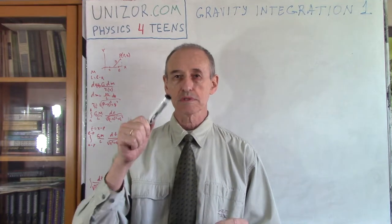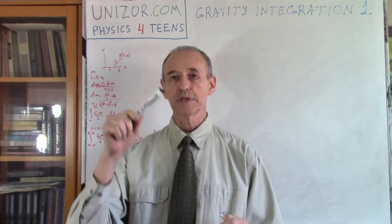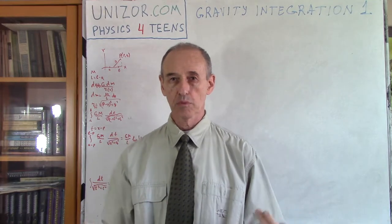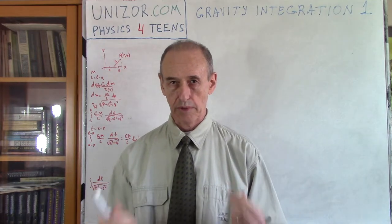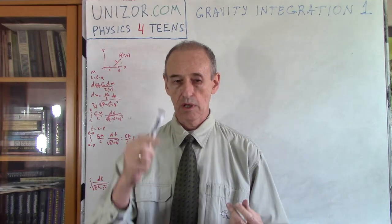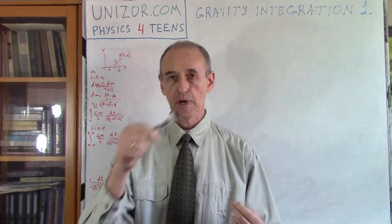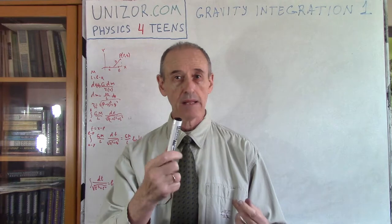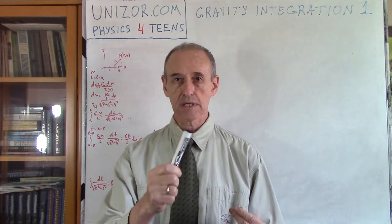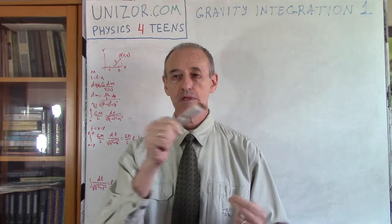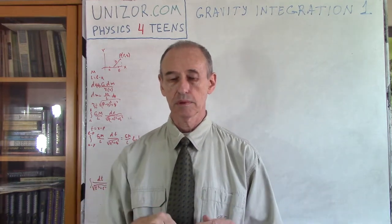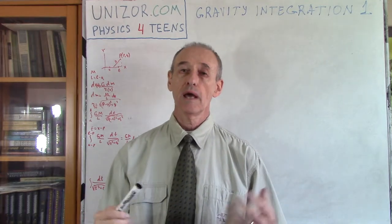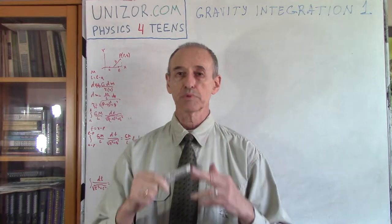So the fields are superpositioned on each other — they are adding the potential. The gravitational potential is an additive function. To calculate the gravitational potential at any point, if you have more than one source of gravity, you can calculate the gravitational potential of each — it's a scalar, not a vector — and then add these potentials together.